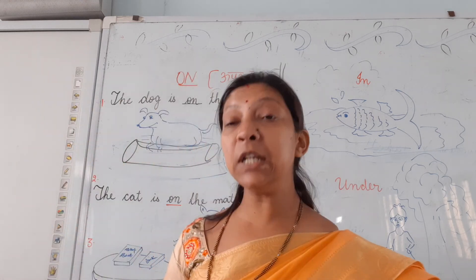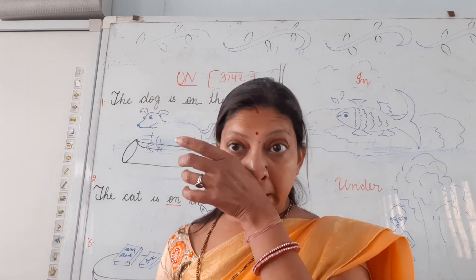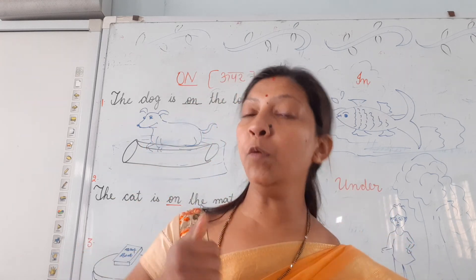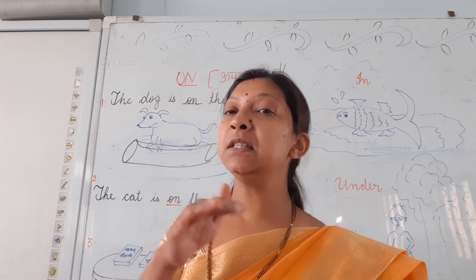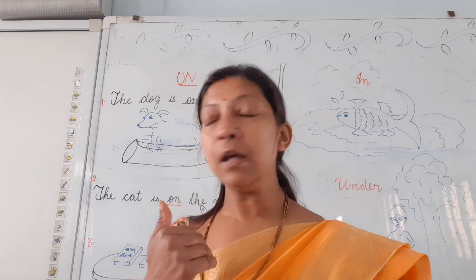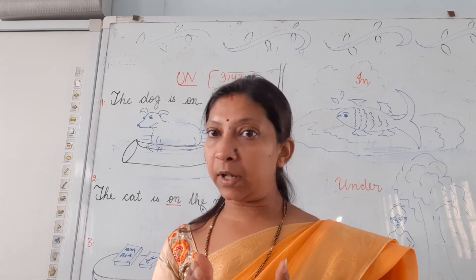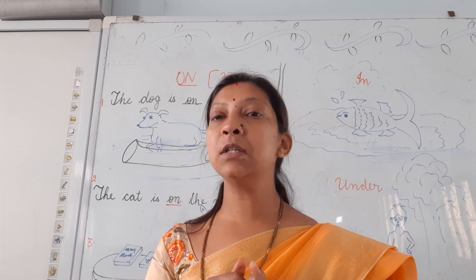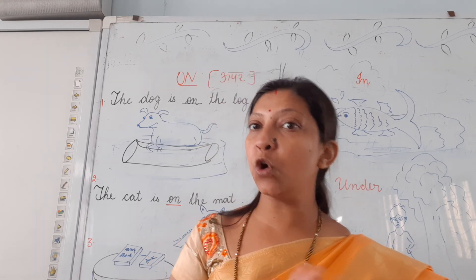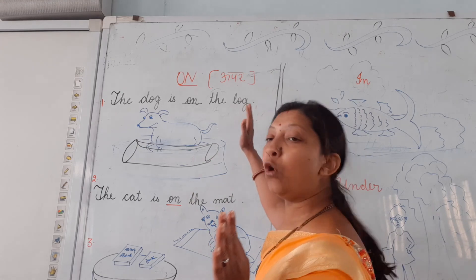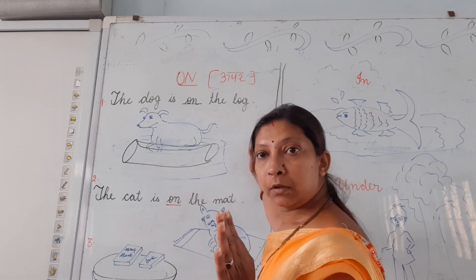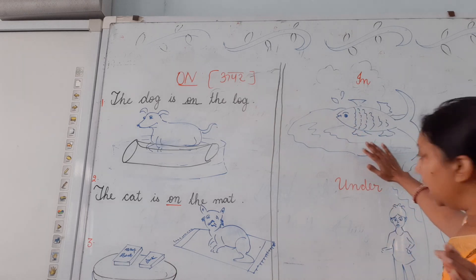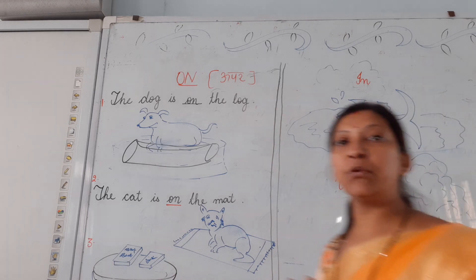Only this much I am going to teach you today. On ka matlab hota hai kisi chiz ke oopar — on means on top of something. The book is on the table. Got it, children? Today we are going to only understand on. Tomorrow we are going to learn in and under. Thank you, children — goodbye!